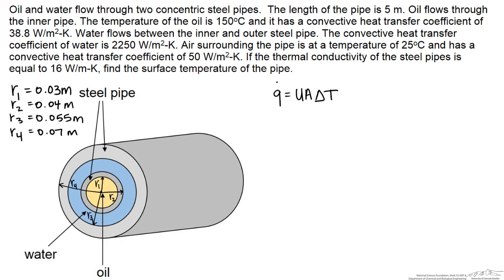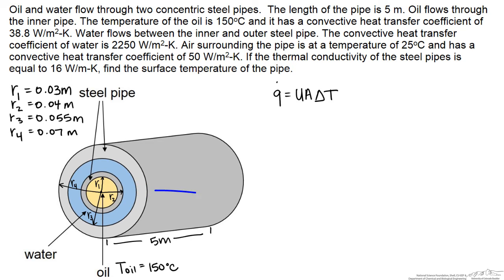Here we are going to look at this pipe and it has a length of 5 meters. We have oil at a temperature of 150 degrees C flowing down the middle of the pipe. Then we have a steel wall that separates it from water. Here is our steel wall, and then here we have water. We have another steel wall here that separates the water from the outside air.